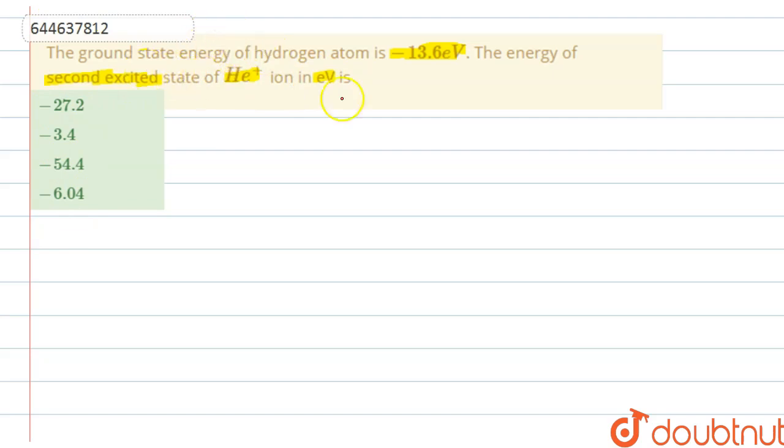So there is a simple formula to find out the energy of any state of any element. The formula is E equals minus 13.6 times z squared by n squared, where z is the atomic number and n is the number of shell in which the electron is present.